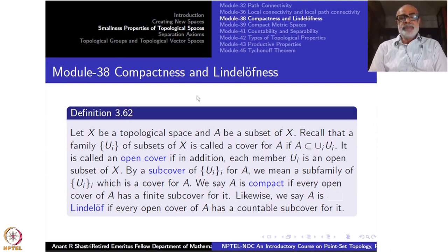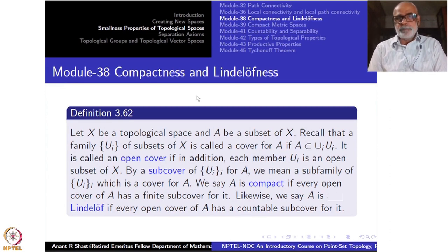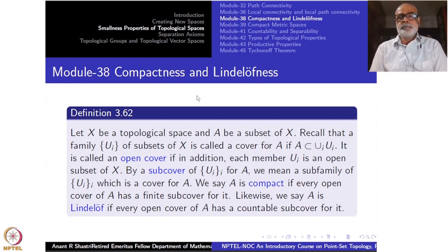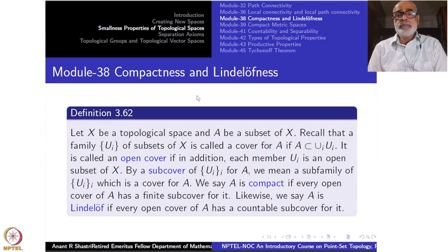Let us start with a definition. Take a topological space X and a subset A. Recall that a family U_i of subsets of X is called a cover for A if A is contained in the union of U_i's. This family will be called an open cover if in addition each member U_i is an open subset of X.